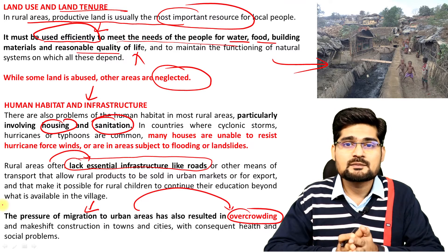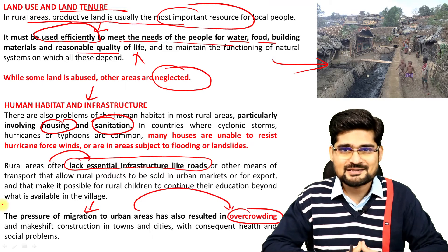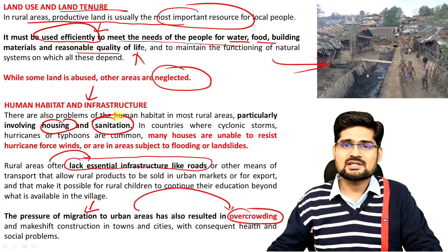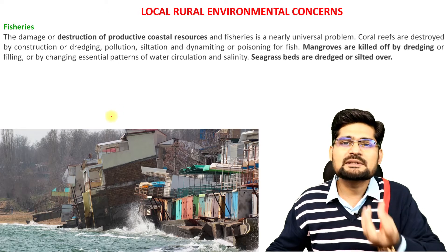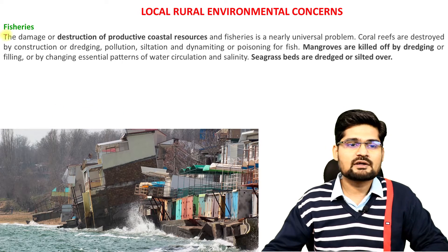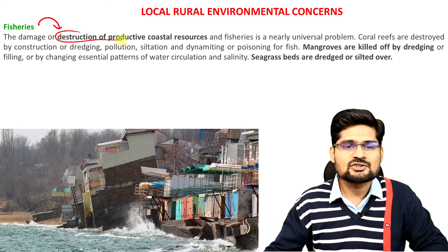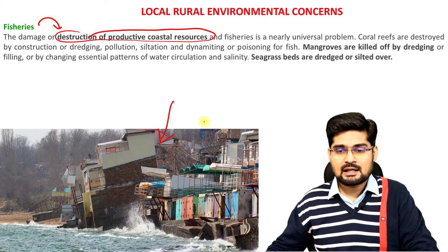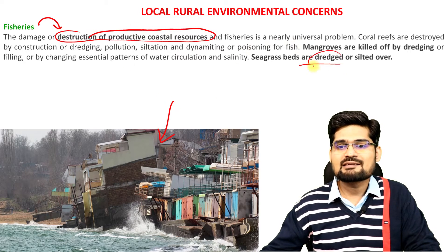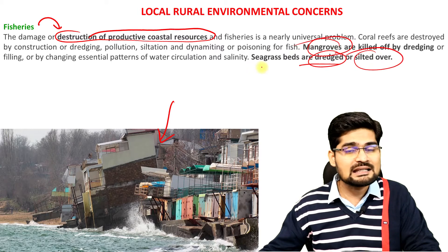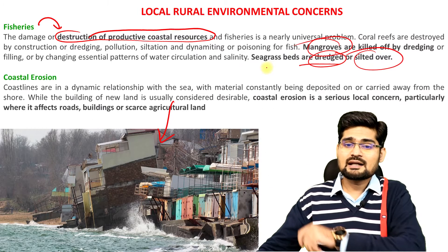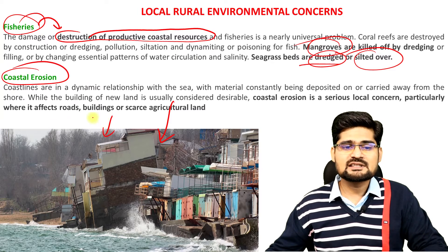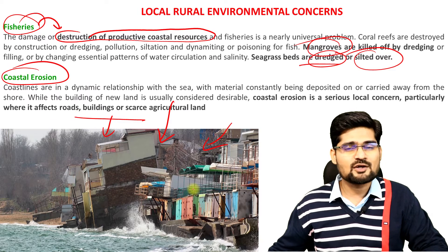People are eventually going to migrate back to urban areas, and urban areas are getting overcrowded — creating urban problems which we are going to look into in separate lectures. Now let's look into some specific local rural issues. For example, fishery issues — destruction of productive coastal resources, coastal erosion, seagrass beds being dredged or silted over, mangroves being killed in many areas of the world.